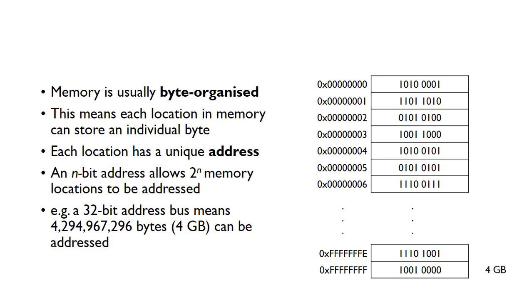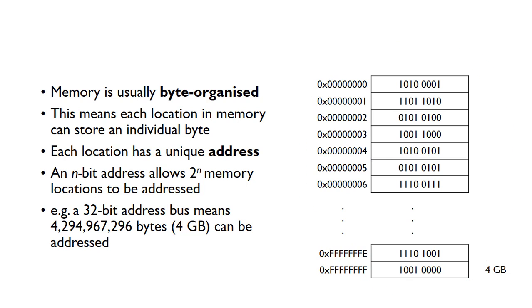Let's look at this example here. This would be a representation of memory, and the memory is split into these different blocks. We've got separate blocks of memory, and each of them can store a byte. These are just random 8-bit values - these are the actual data values stored in that particular memory location.